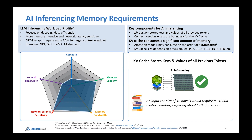Beyond the model, the KV cache itself is huge, depending on how many users, how long the prompt is, and what the output is. A fun example would be: if you wanted to ask a question about 10 novels, the amount of information in those novels would equate to about a million tokens, which is about one terabyte of memory. So this is a pretty big problem that we're trying to solve with CXL.